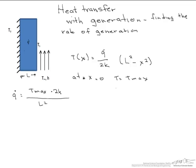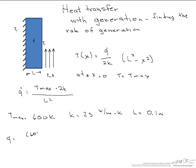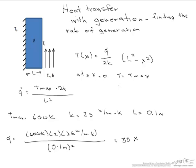Let's look at this when we put in some numbers. Let's say we have a T max equal to 600K. Our thermal conductivity is 25 watts per meter K, and the length of our wall is 0.1 meters. So our Q dot is going to equal 600K times 2 times 25 watts per meter K, all divided by 0.1 meter squared. And when we calculate that, we come out with 30 times 10 to the fifth watts per meter cubed.